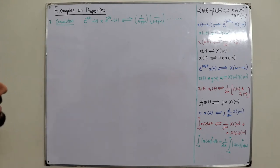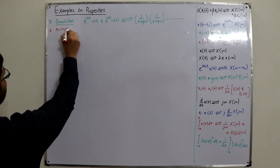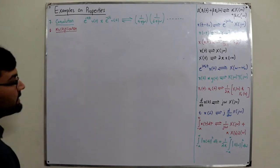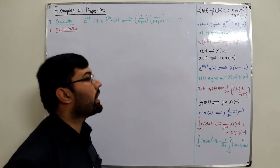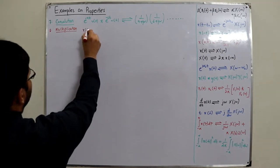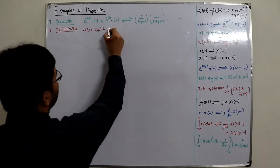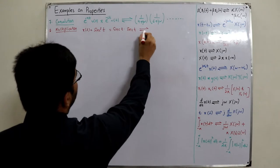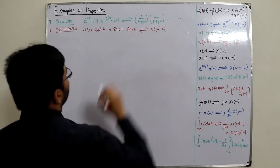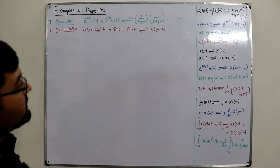Property number eight is multiplication. If you multiply two signals in the time domain, you have to find the convolution of the corresponding Fourier transforms and divide by 2π. Let me take a signal x(t) = sinc²(t), which I can write as sinc(t) · sinc(t). The corresponding Fourier transform x(jω) is unknown, so let me do it graphically for simplicity.